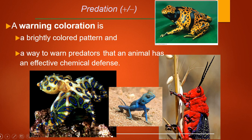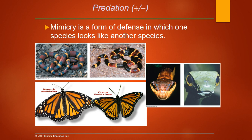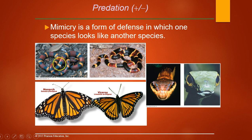Instead of blending in, some species use warning coloration when they produce toxic chemicals. This very small blue-ringed octopus is an example — it's poisonous if it bites you and you die; venomous if you bite it and you die. We also see lizard, grasshopper, and frog examples. Another defense is mimicry, where two species look very similar — one is dangerous and the other may or may not be. You may have heard the saying: 'red on black, you're okay Jack; red on yellow, you're a dead fellow.'